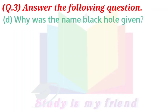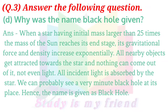D. Why was the name black hole given? Answer: When a star having initial mass larger than 25 times the mass of the sun reaches its end stage, its gravitational force and density increase exponentially. All nearby objects get attracted toward the star and nothing can come out of it — not even light. All incident light is absorbed by the star. We can probably see a very minute black hole at its place. Hence, the name is given as black hole.